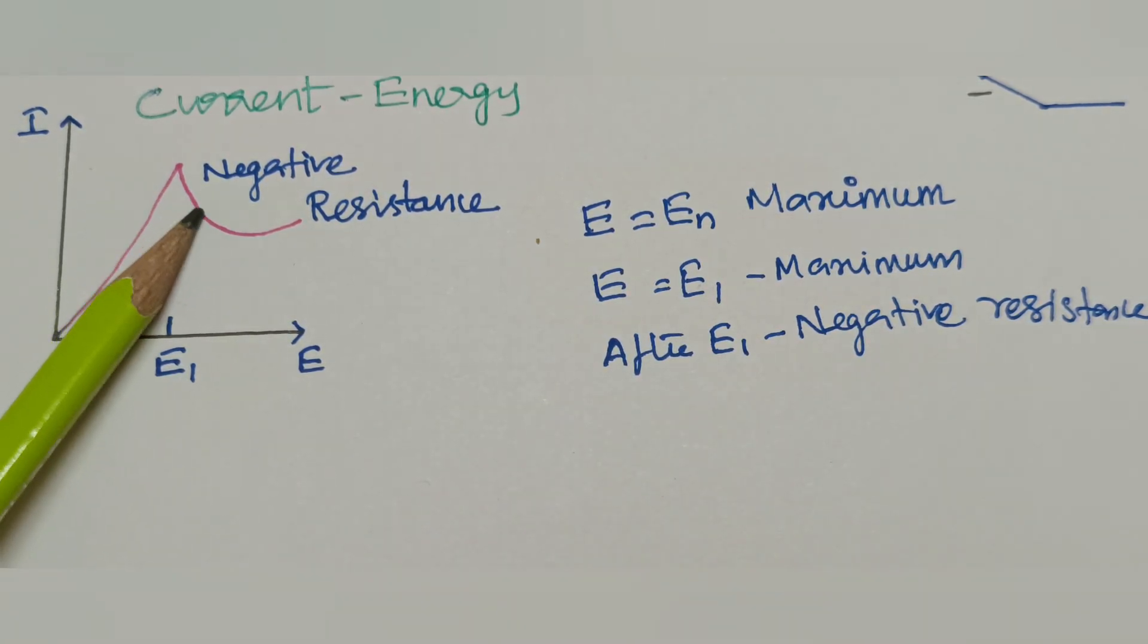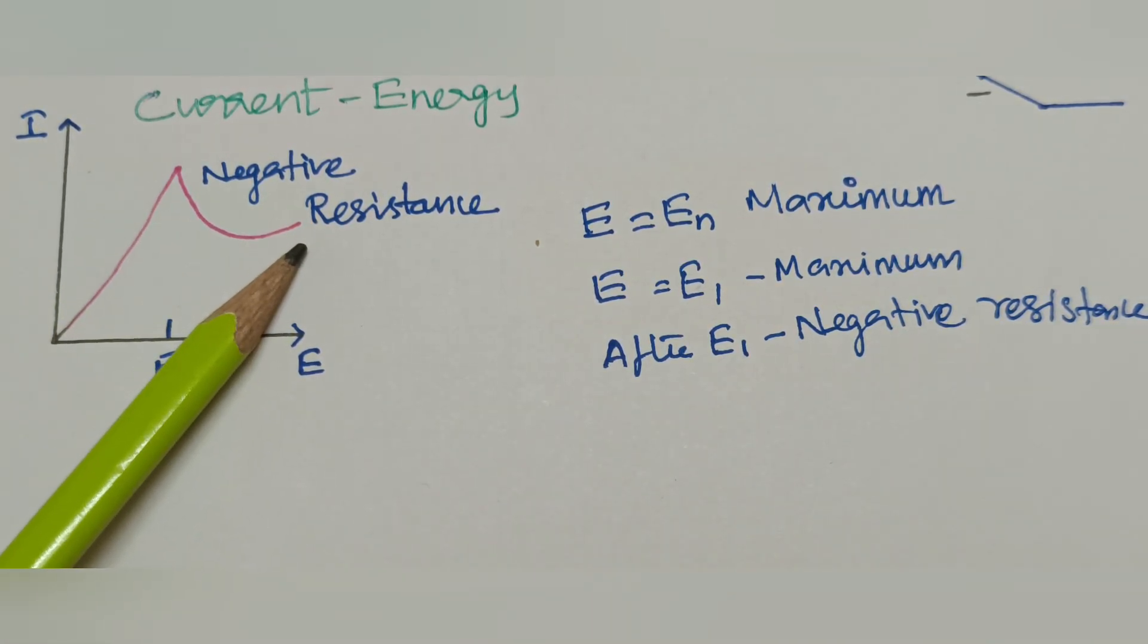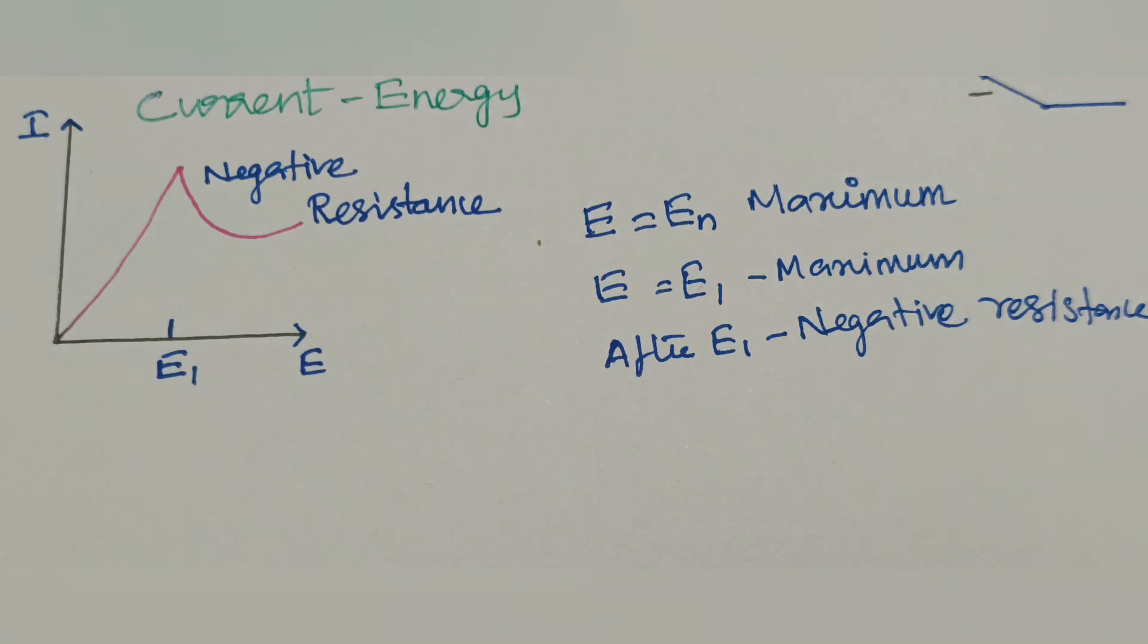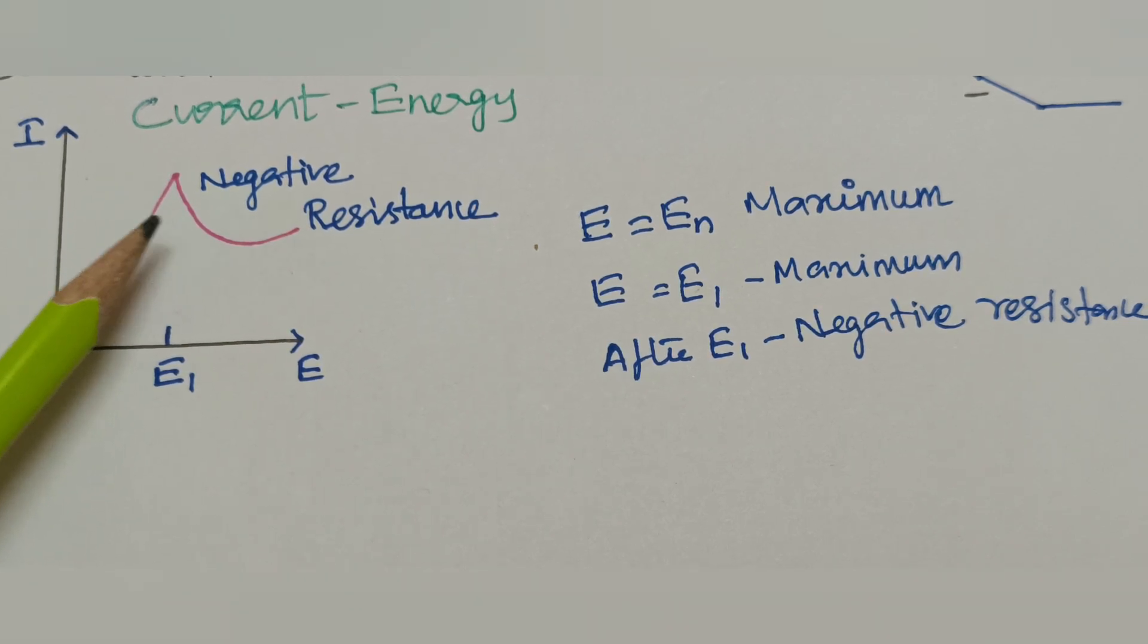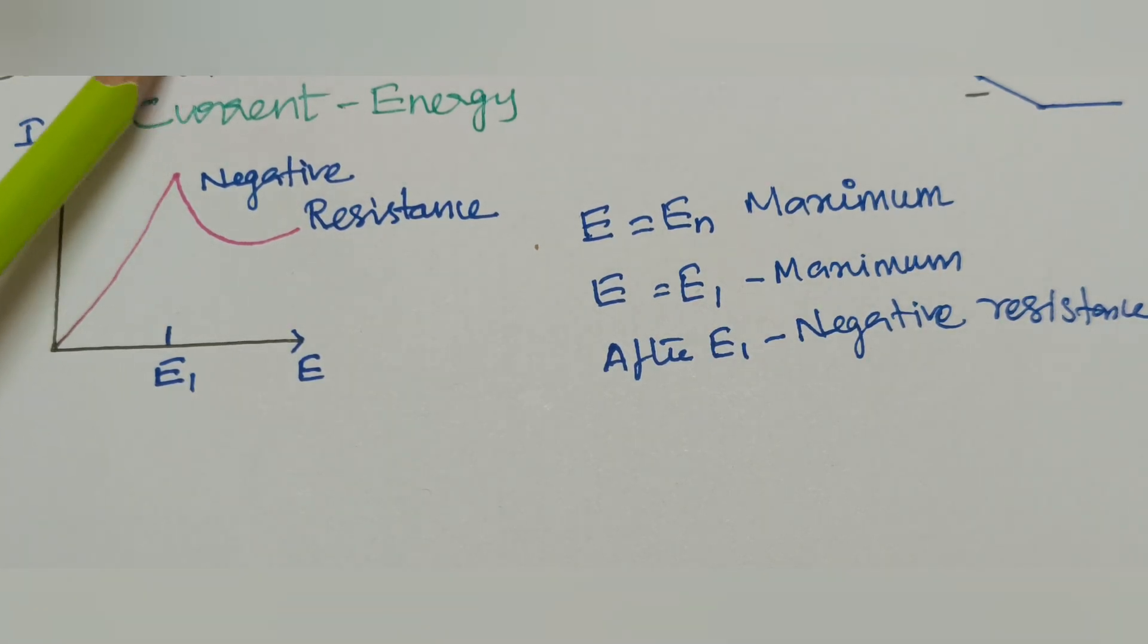After E1, the resistance is negative resistance. And valley will occur as E approaches and then moves across the discrete energy states. At this point, the energy state is discrete energy state. This is the resonance tunneling diode.